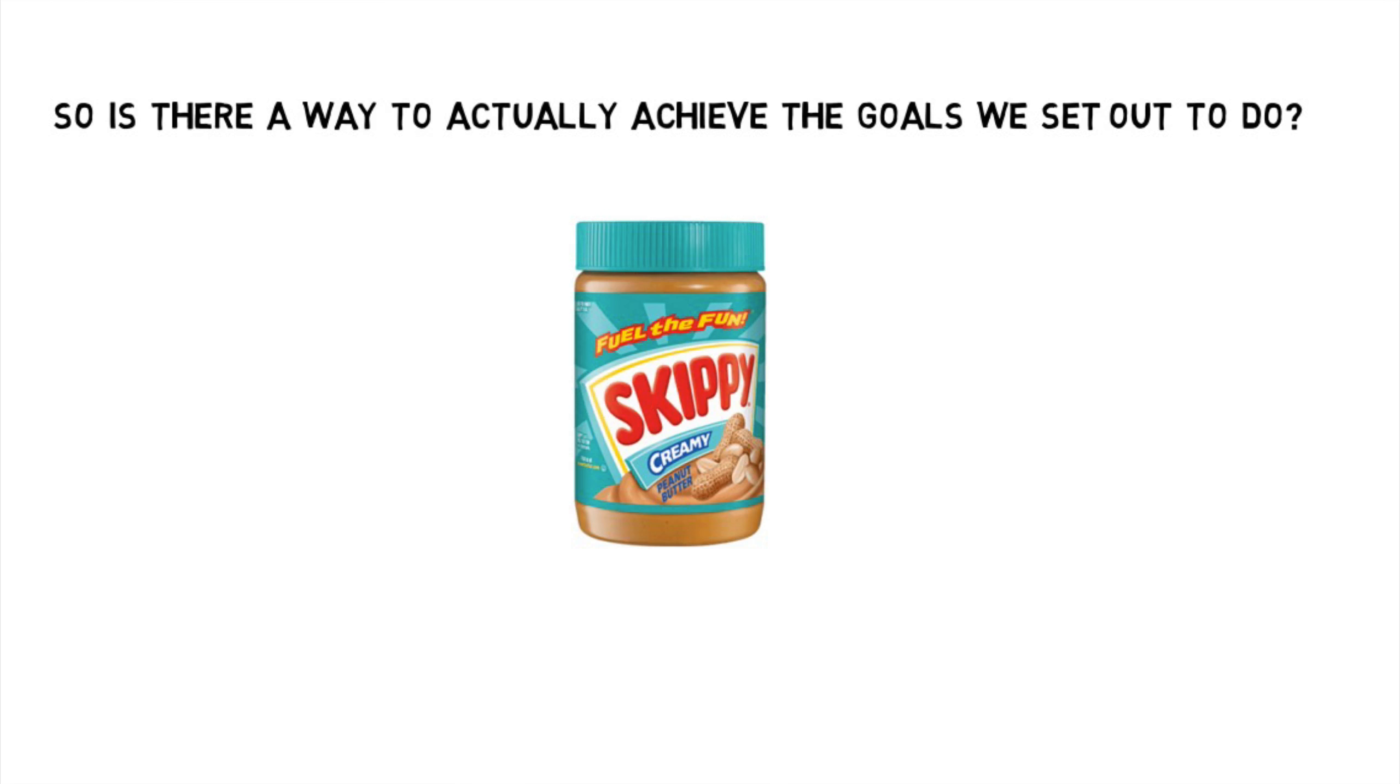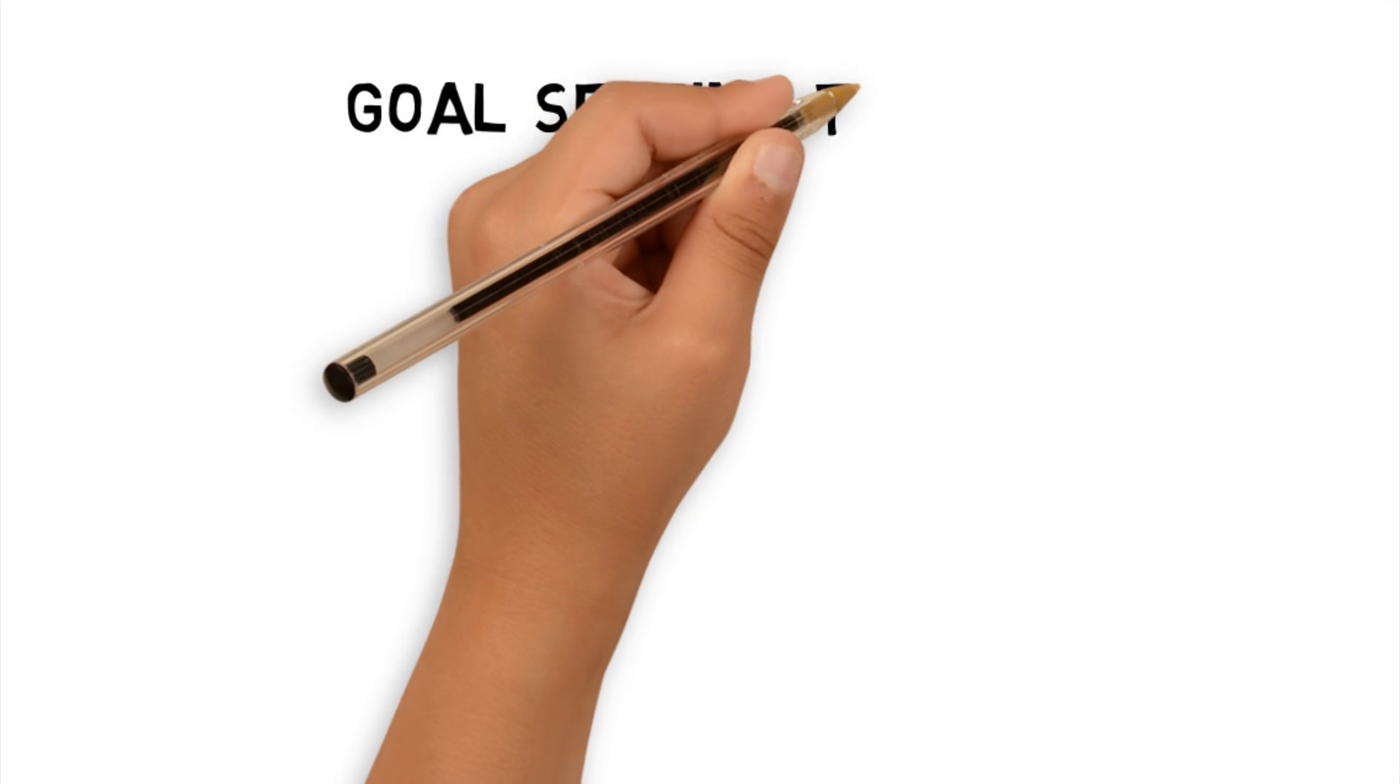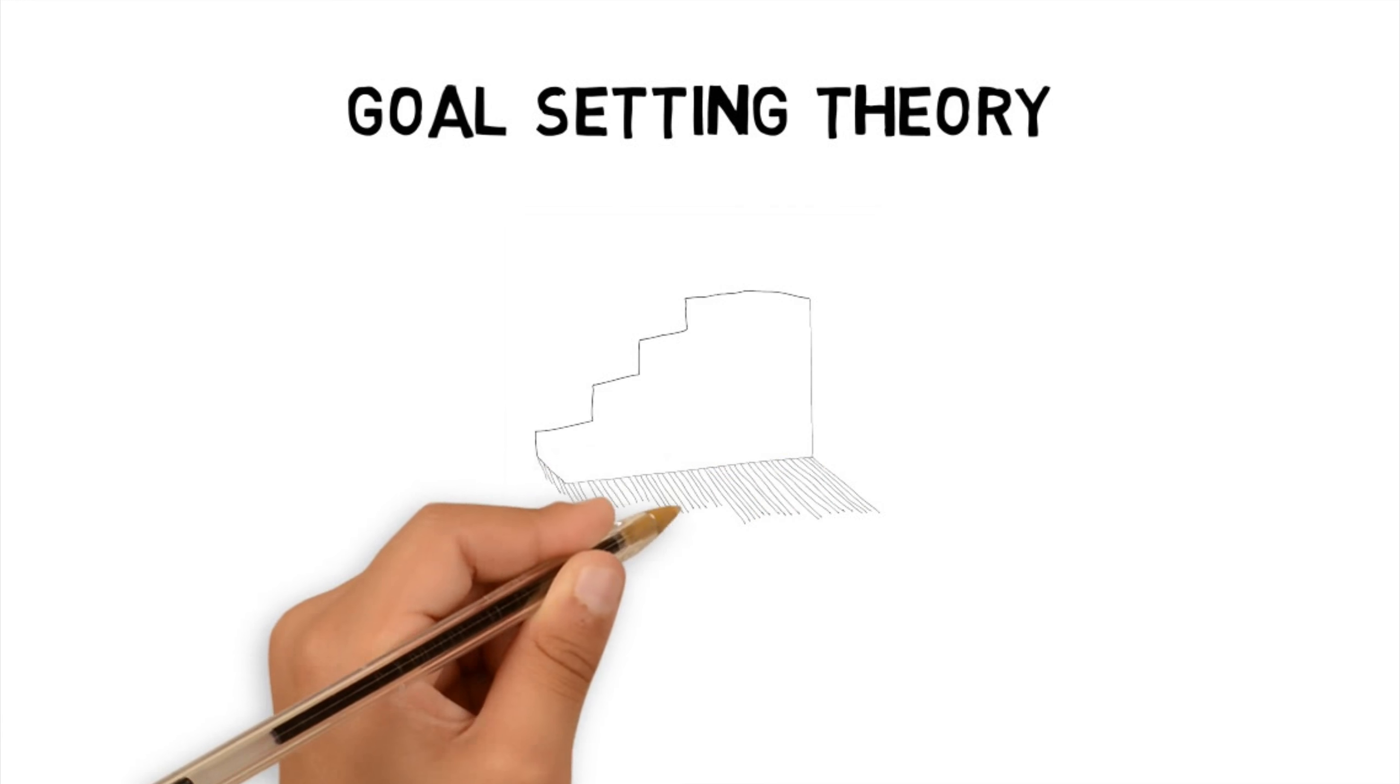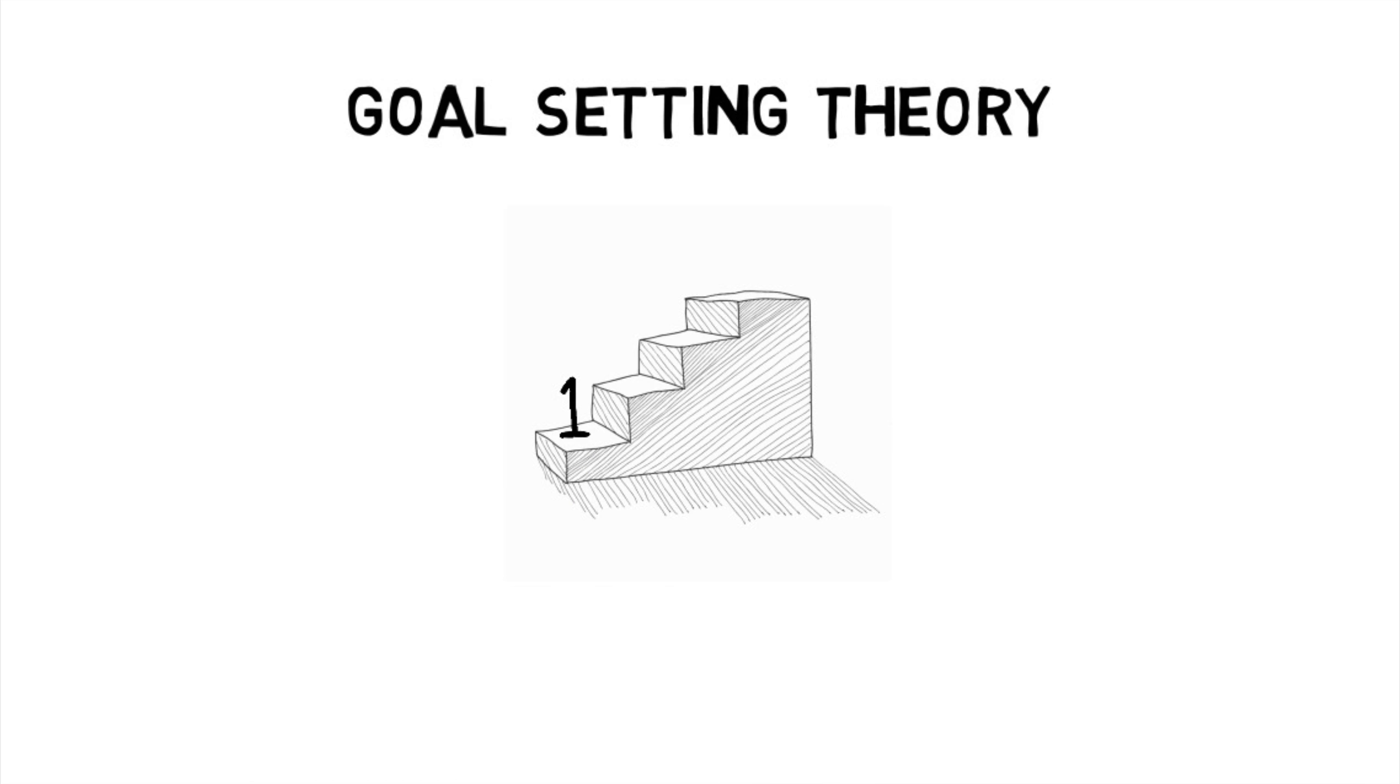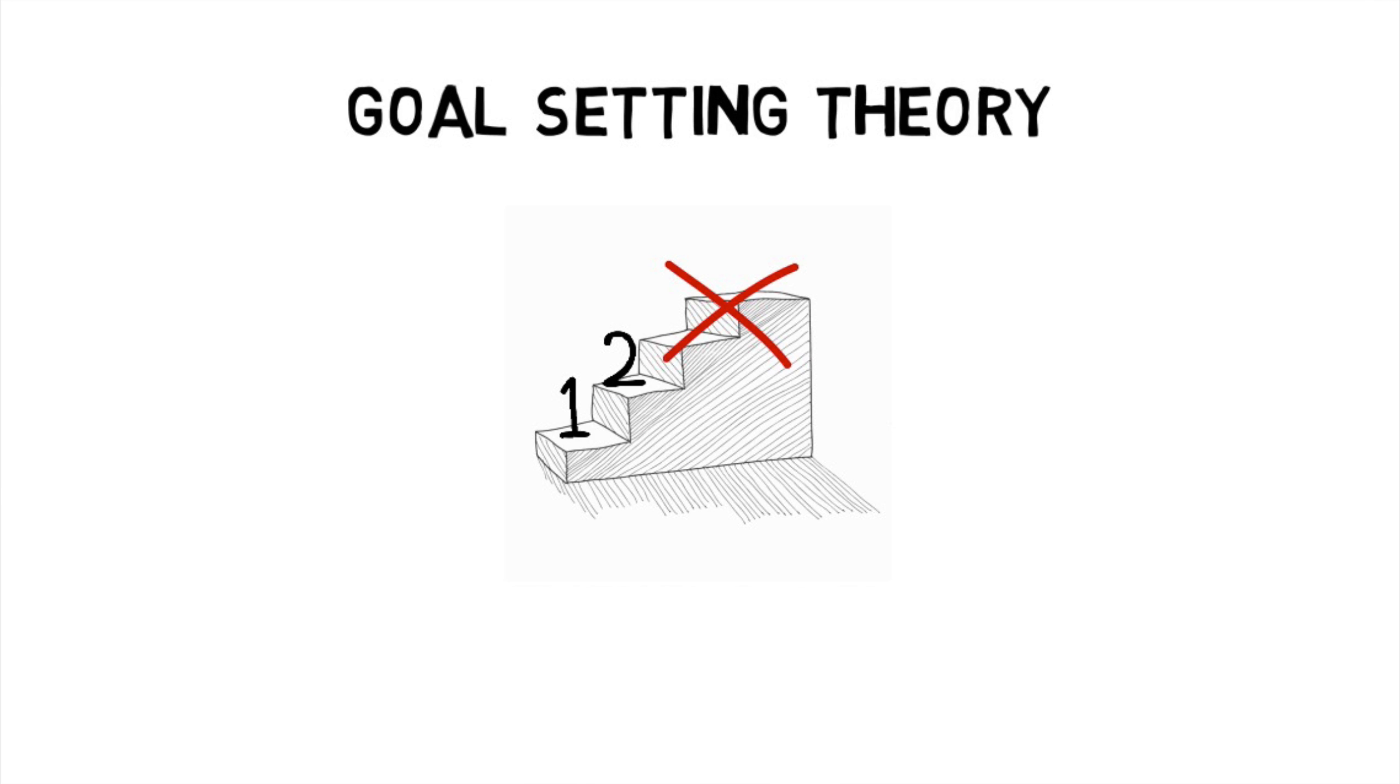Damn skippy there is. Organizational psychologists Locke and Latham spent years conducting research on how people set out their goals, and they call their theory goal-setting theory. I mean the name kind of sucks but at least it gets right to the point. Okay, I'm gonna try to summarize their years of research in just two simple, easy to follow steps.